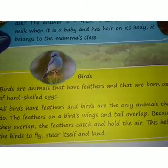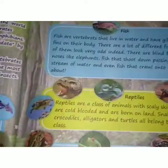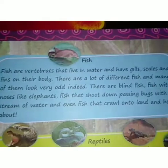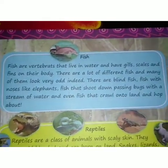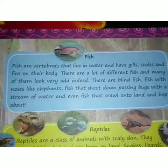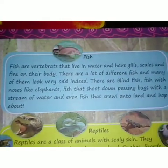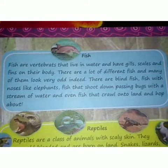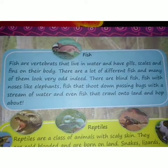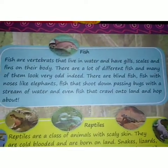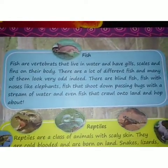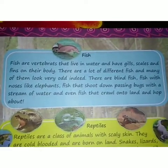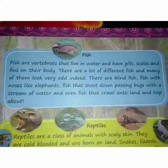Next is fish. Fish are vertebrates that live in water and have gills, scales, and fins on their body. There are a lot of different fish and many of them look very odd indeed — there are blind fish, fish with noses like elephants.